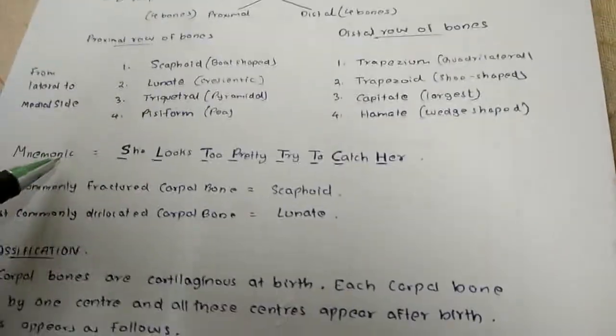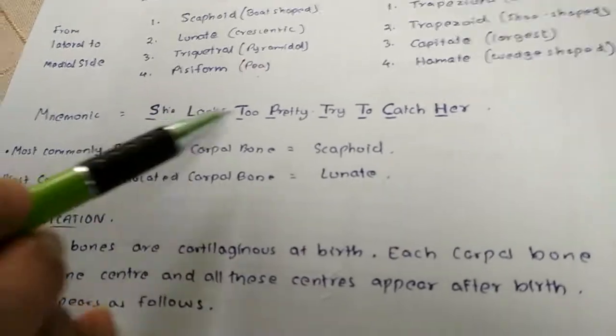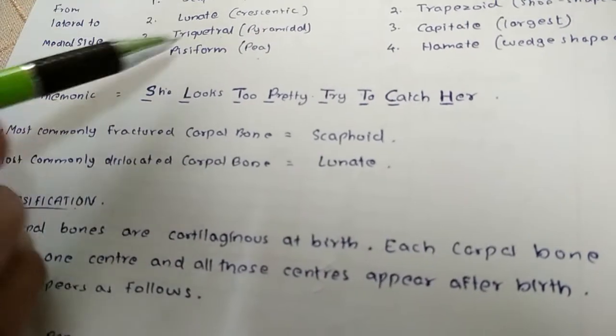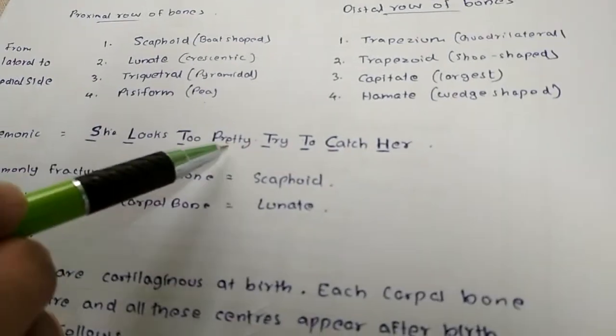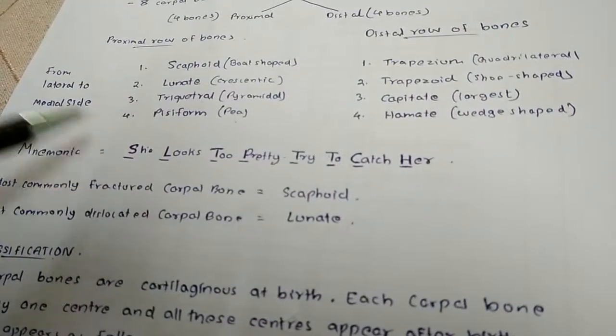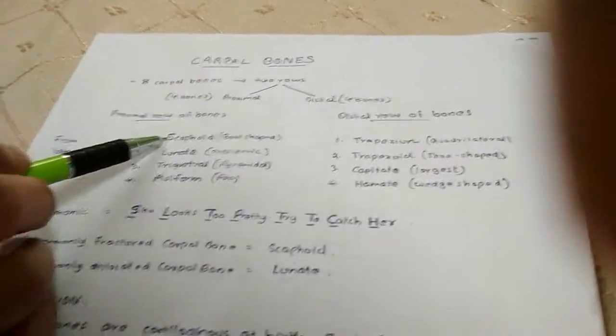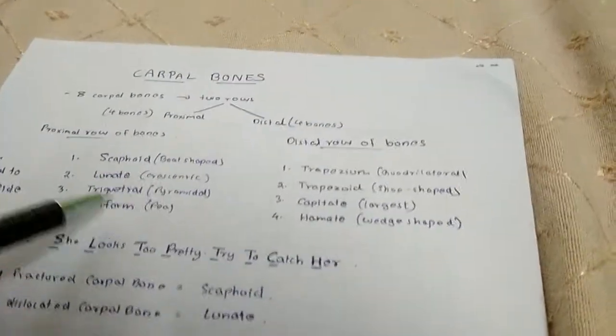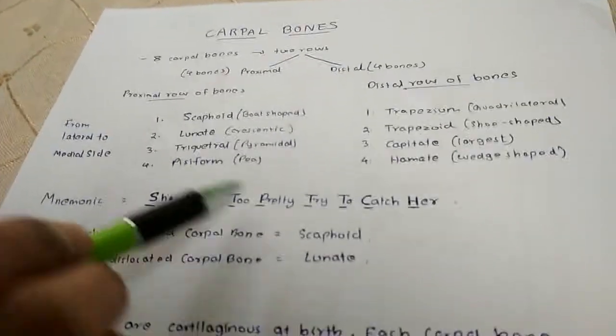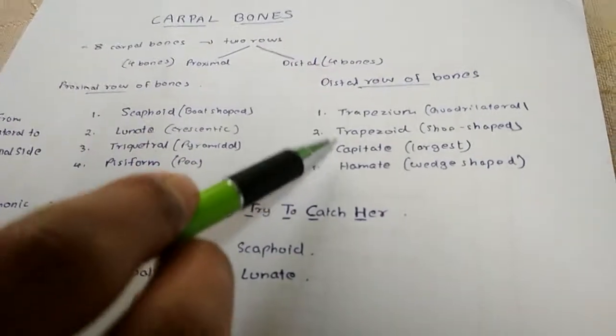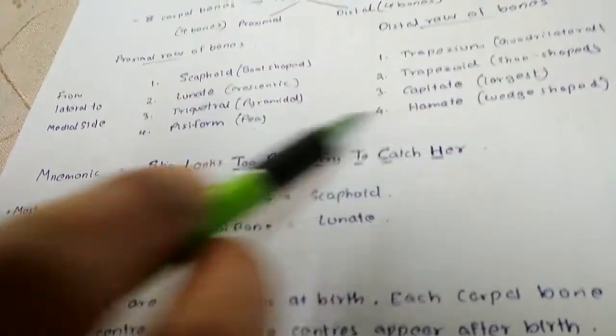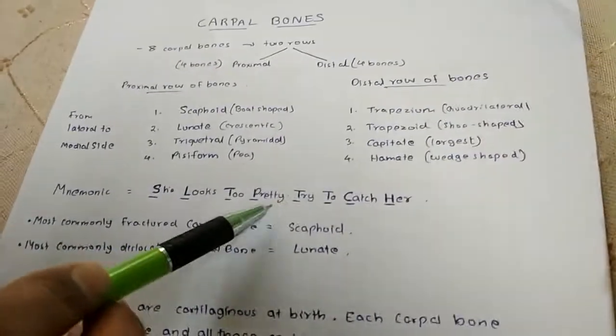Now there is a mnemonic to learn this, that is she looks too pretty try to catch her. Here we can name from the first letters of these eight words: S stands for scaphoid, L stands for lunate, T stands for triquetral, P stands for pisiform, T stands for trapezium, T stands for trapezoid, C stands for capitate and H stands for hamate.